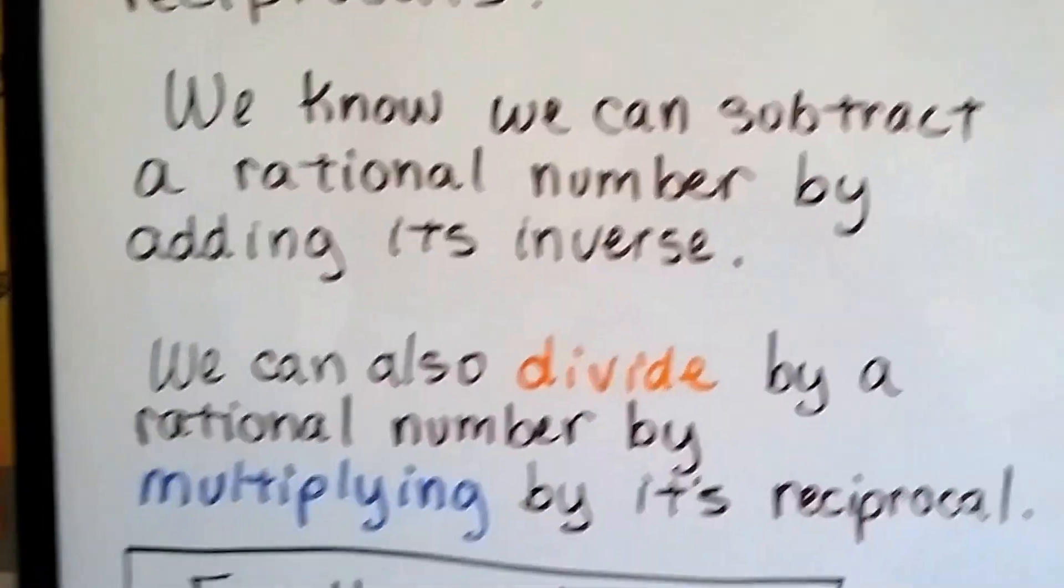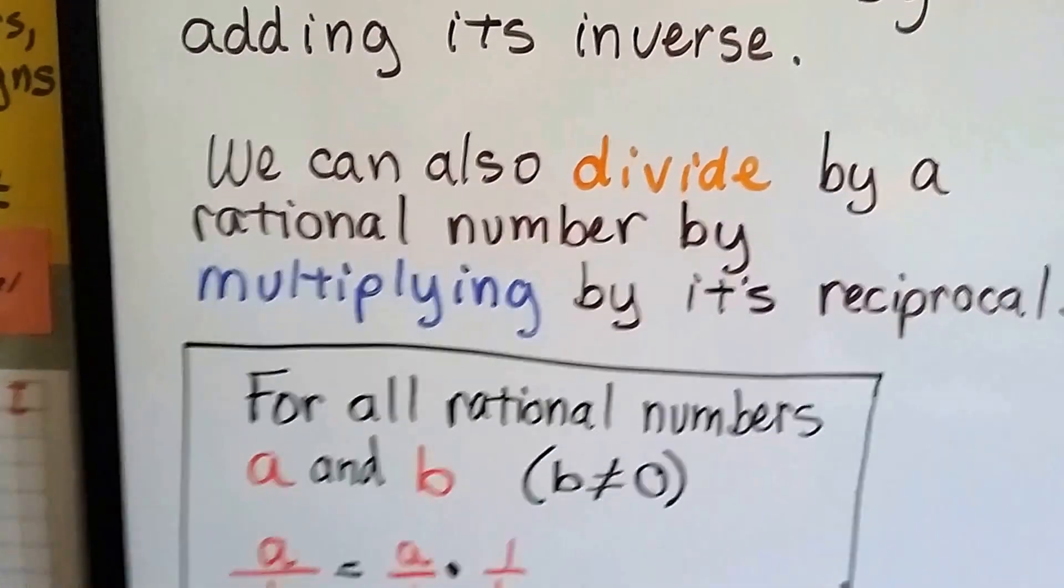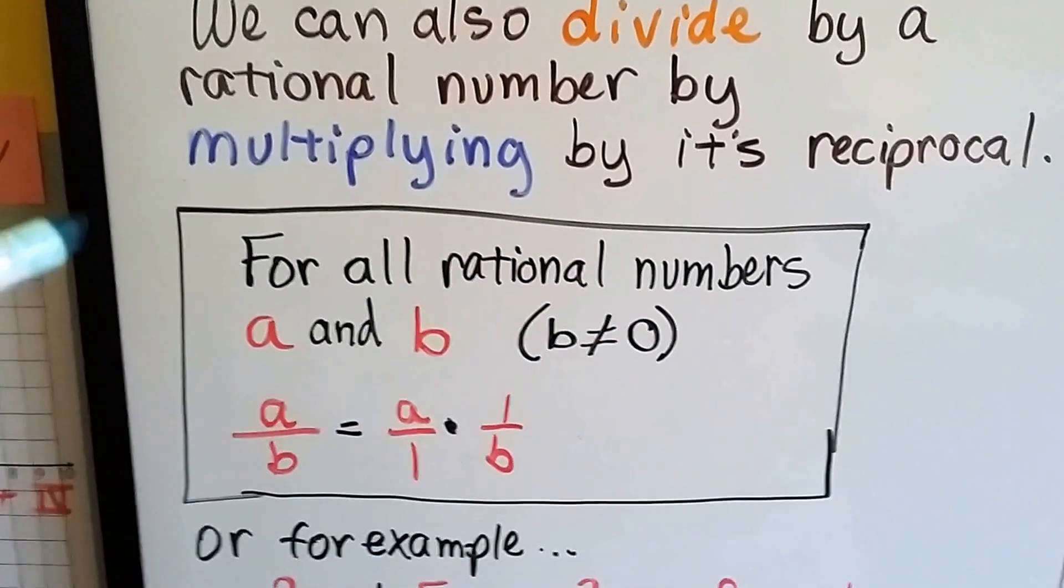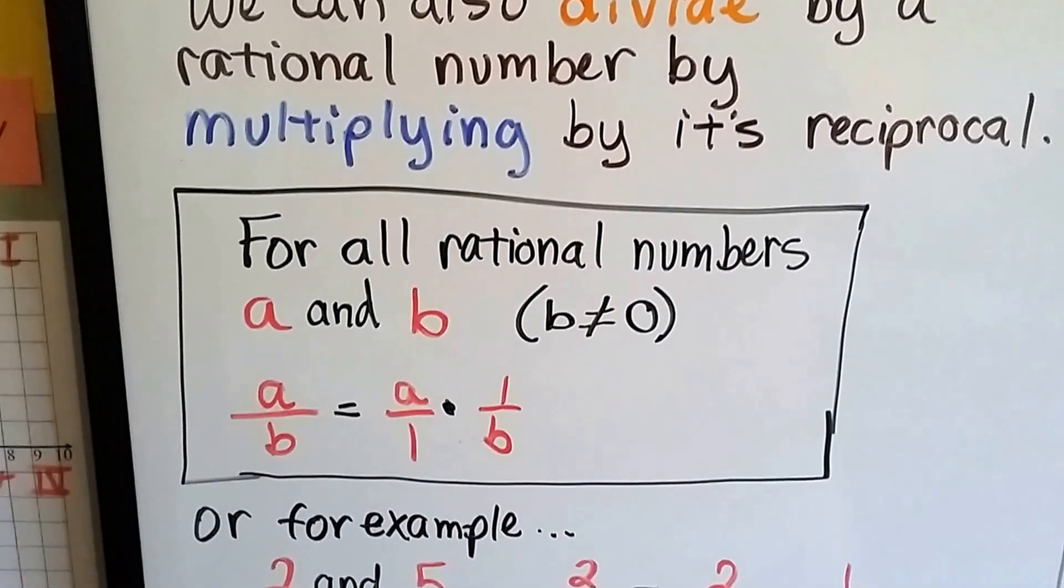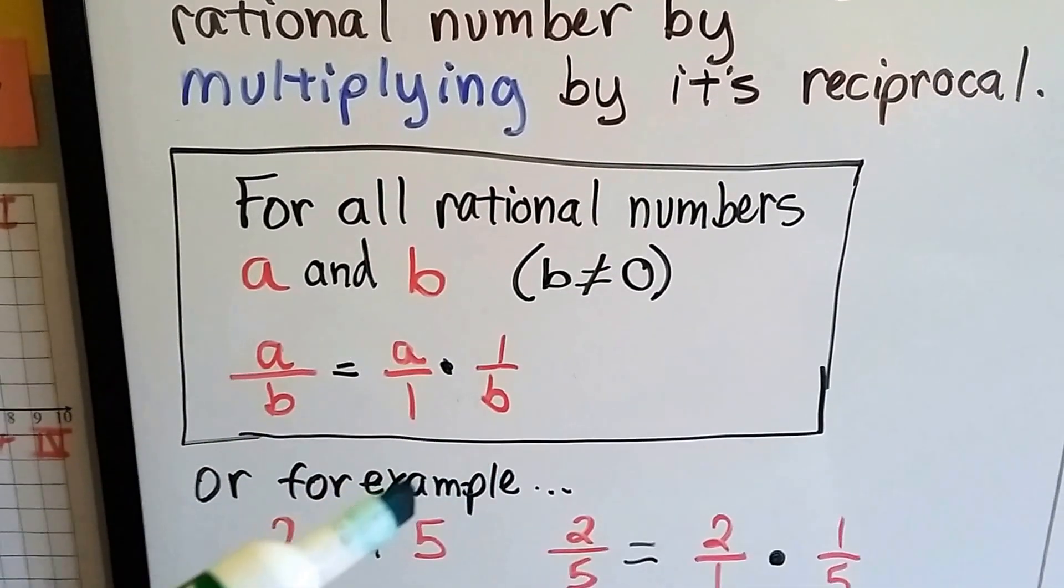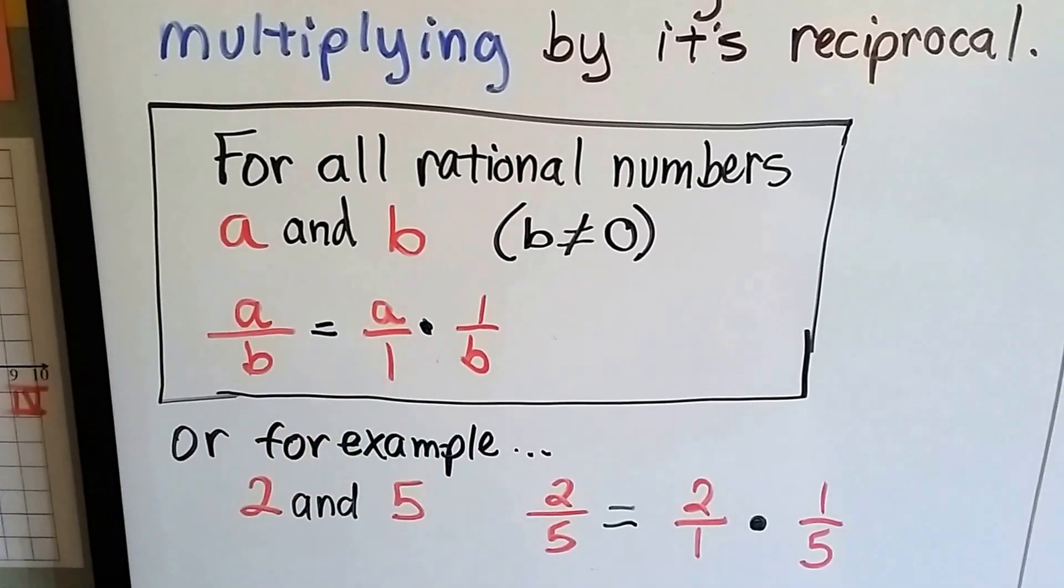We can also divide by a rational number by multiplying its reciprocal. So for all rational numbers a and b, as long as b is not 0, a over b is going to equal a over 1 times 1 over b. It'll be 1 times a over 1 times b. It'll be a over b.